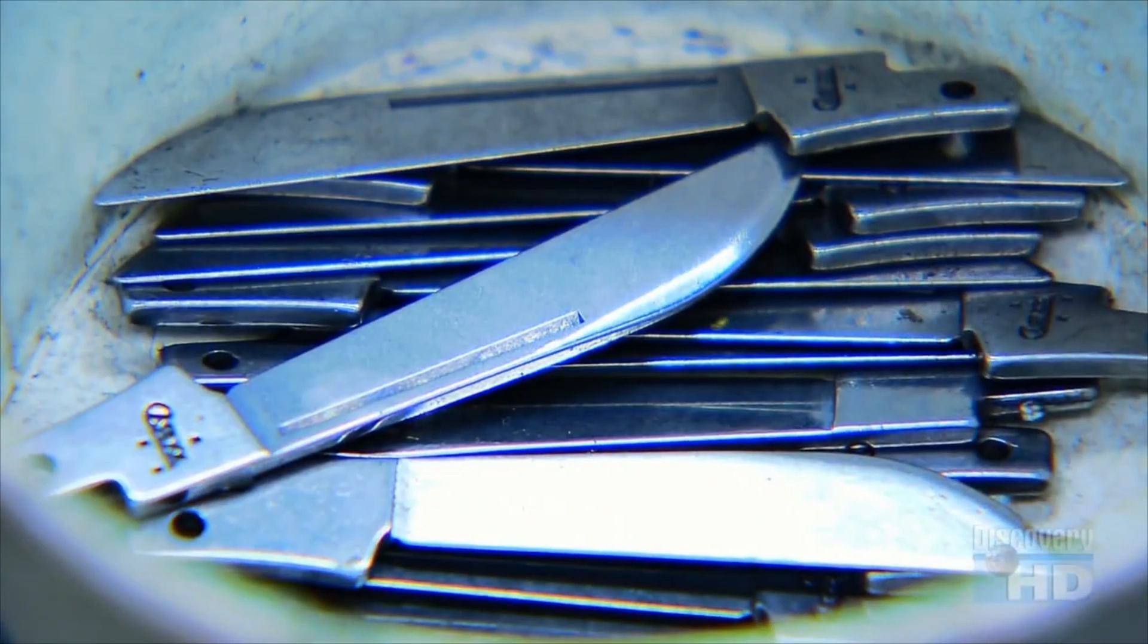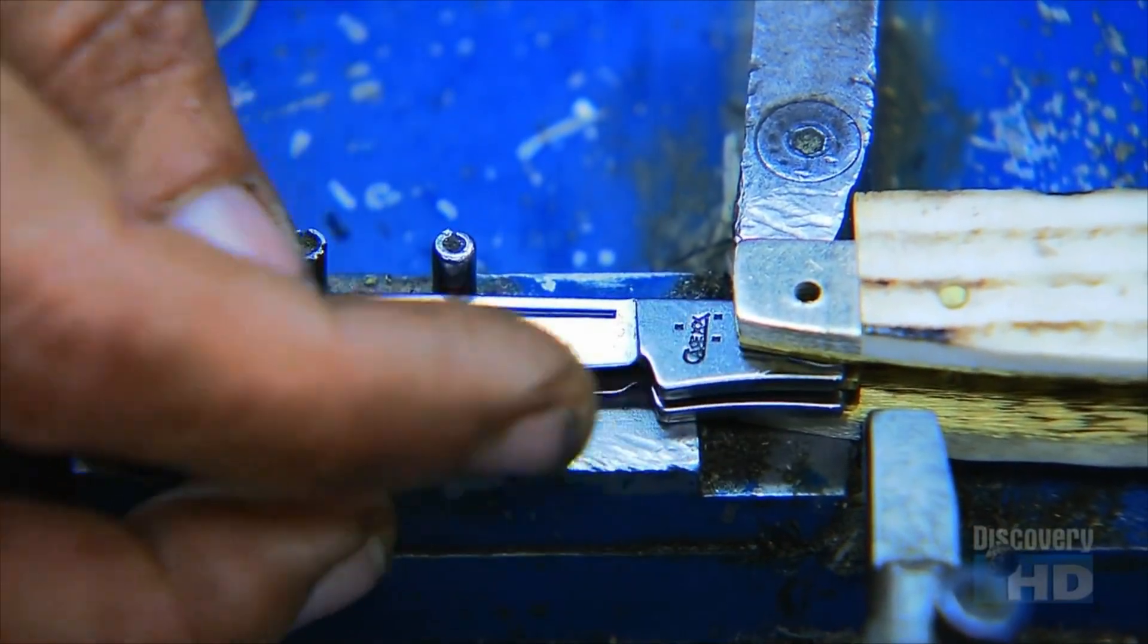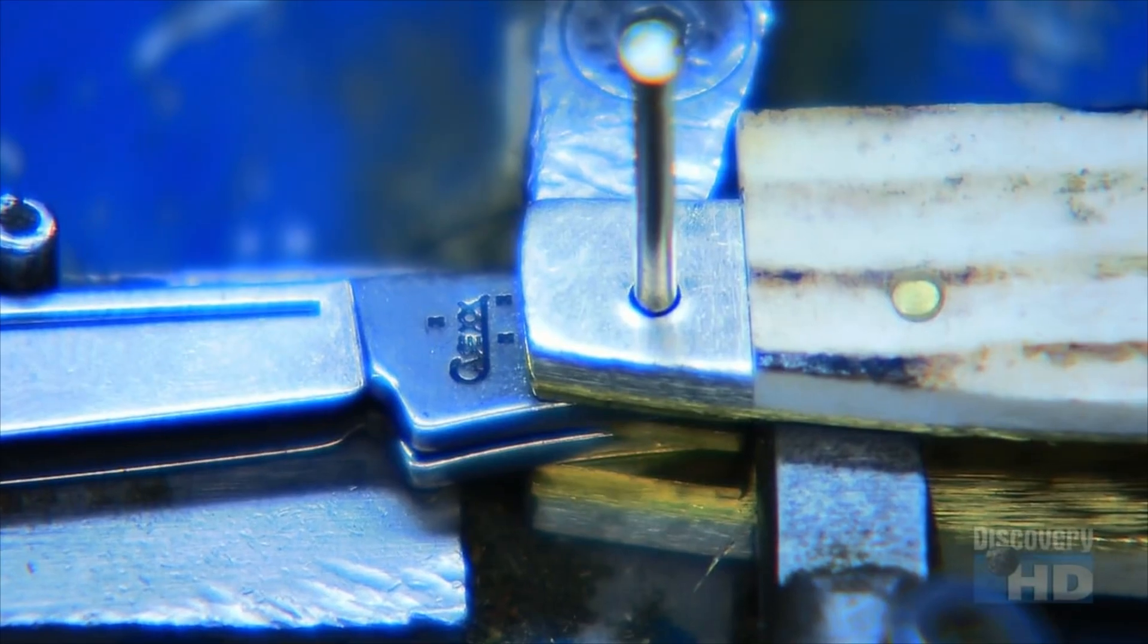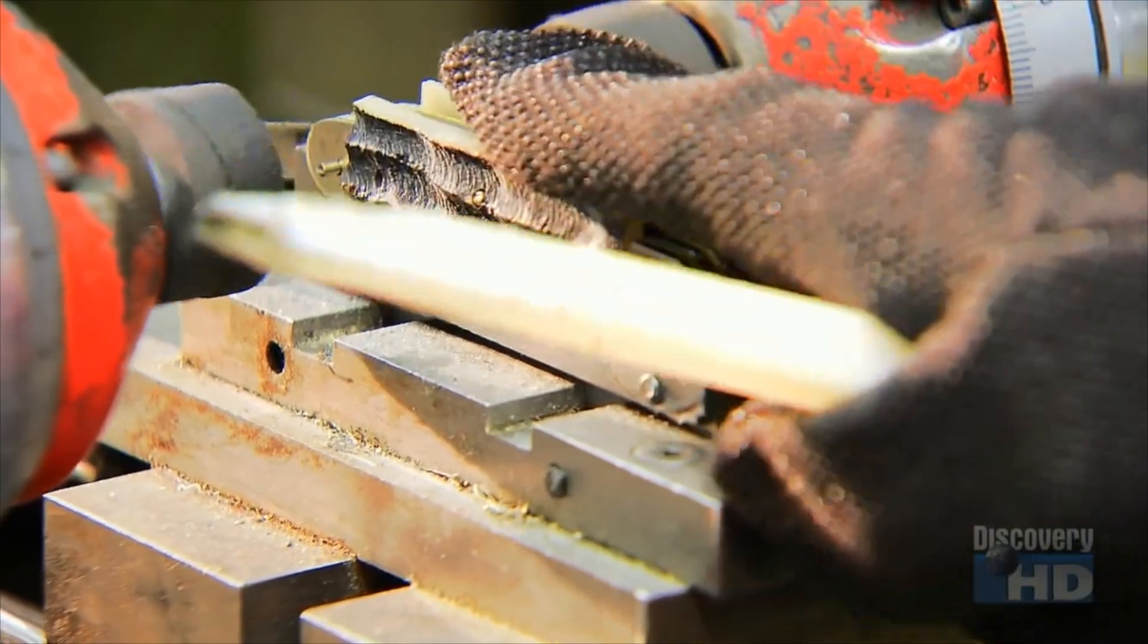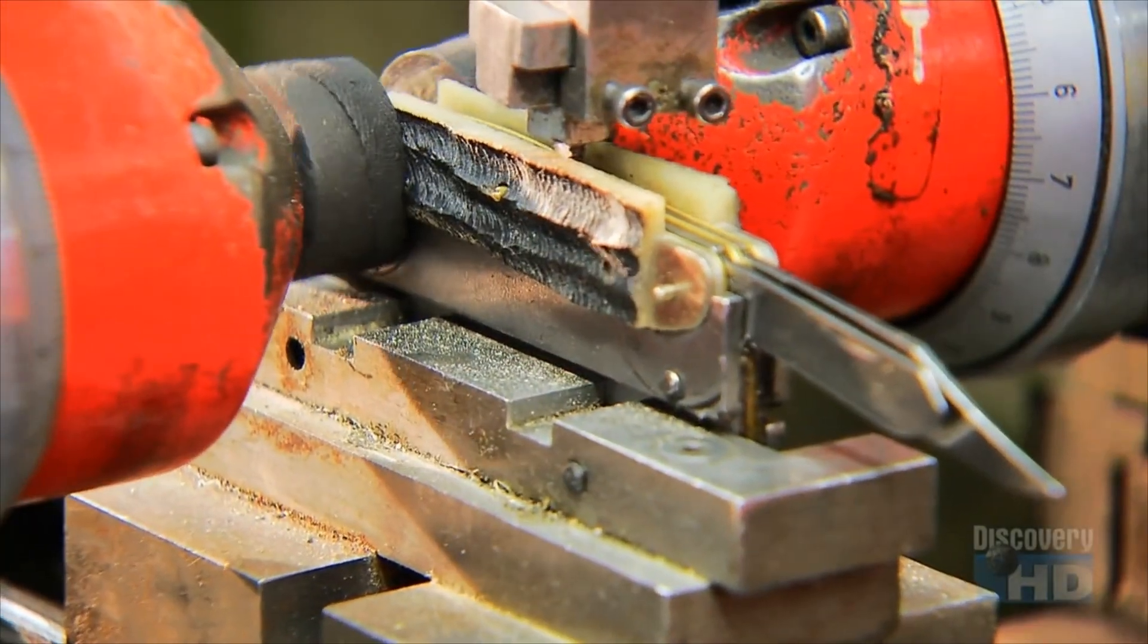They pop different blades in the other end of the pocket knife and drive a pin into that stack. A pneumatic tool flattens the ends of the pins, essentially riveting all the parts together.